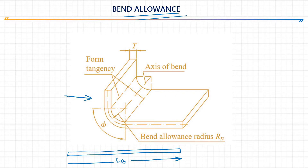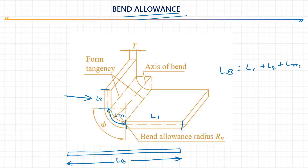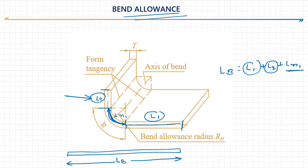So we have to calculate the length of blank. That blank length is the complete length — this portion L1, this portion L2, and this bend portion at the neutral axis is LN1. If you calculate the blank length, then Lb equals L1 plus L2 plus LN1. L1 and L2 are straight portions, but LN1 is the arc of the bend and cannot be calculated simply, so we need a formula. The arc at the neutral axis is called bend allowance.